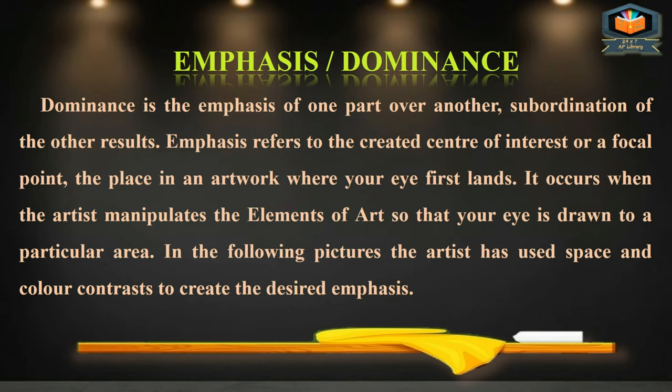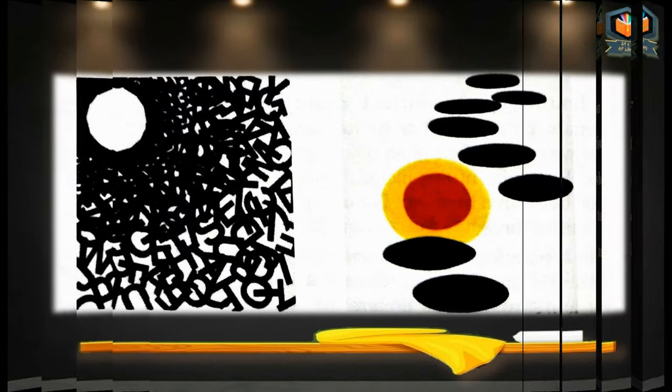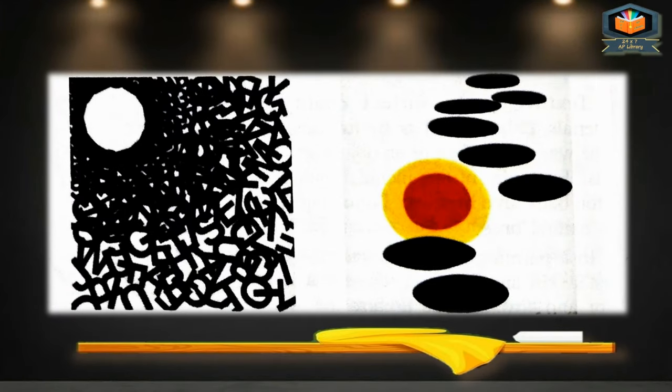In the following pictures, the artist has used space and color contrasts to create the desired emphasis. In these two pictures we can see clearly: in the first, a hole is dominant — when we see this picture, our eye will fix on that hole. In the second picture, our eye will fix on a different dominant part. These two are the dominant parts of their respective pictures.